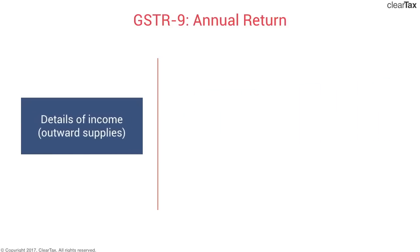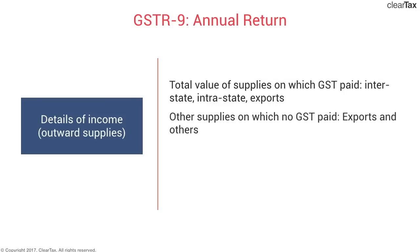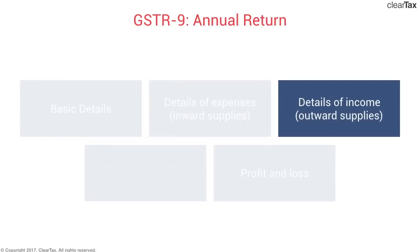The third category is detail of income. This includes all value of supplies on which GST is paid, split for interstate, intrastate, and export. Any other supplies on which no GST has been paid, split for exports and others. All purchase returns — whatever returns people who purchase from you may make — should be netted off. Any other income other than supplies, all income line items appearing in your profit and loss, have to be filled in across these four broad headings. Most of it is available through your GSTR-3, and whatever is not would be directly in your profit and loss account.